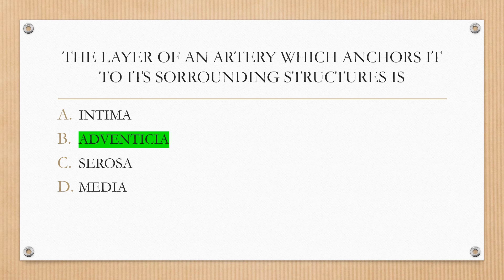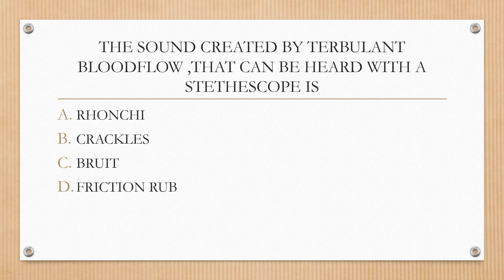Next question. The sound created by turbulent blood flow that can be heard with a stethoscope is: option A ronchi, option B crackles, option C bruit, option D friction rub. The correct answer is option C, bruit.